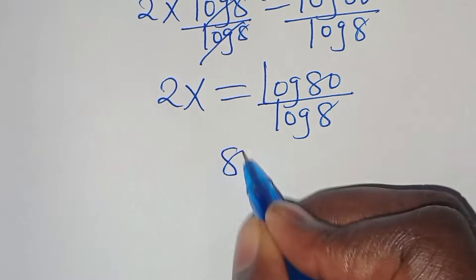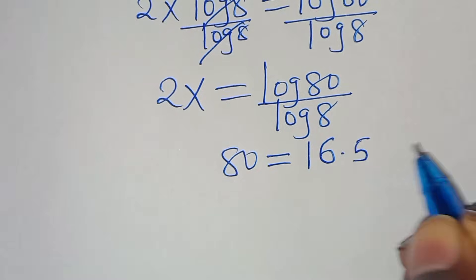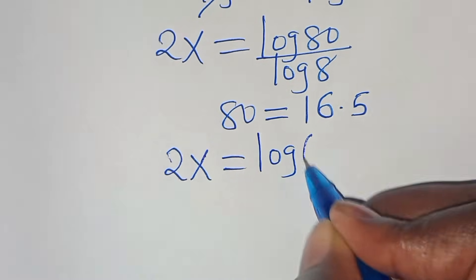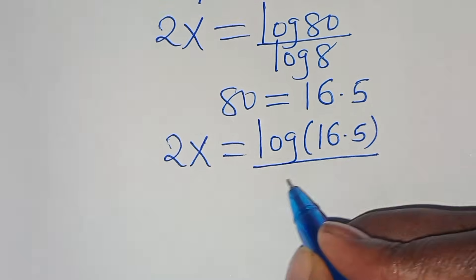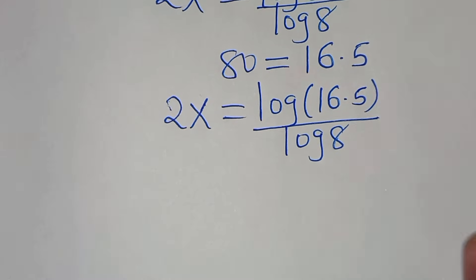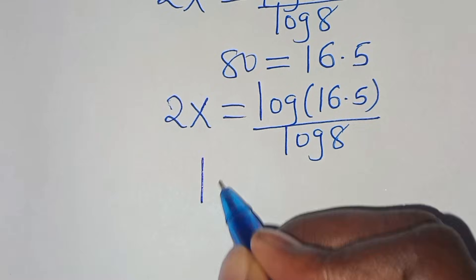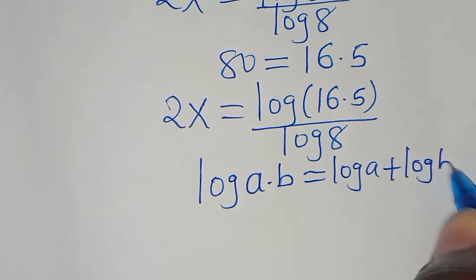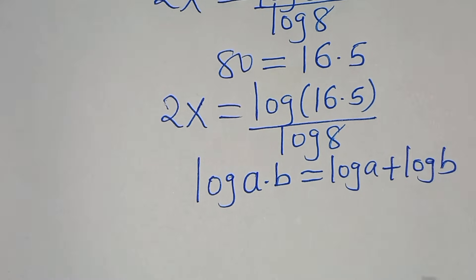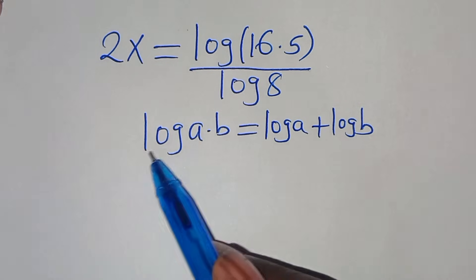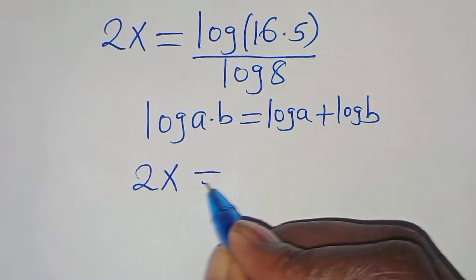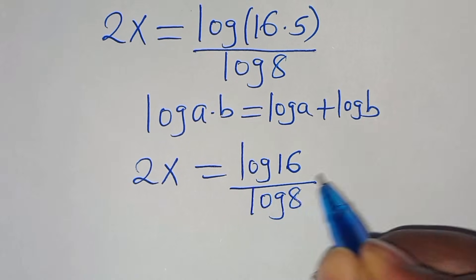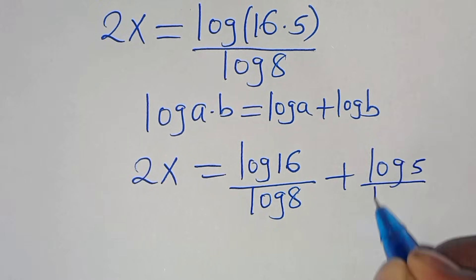Now we can express 80 as 16 multiplied by 5. So we have 2x equals log(16 × 5) divided by log(8). Now log(16 × 5) is in the form of log(a × b), which we can express as log(a) plus log(b). Applying this logarithm property, we have 2x equals log(16) divided by log(8) plus log(5) divided by log(8).